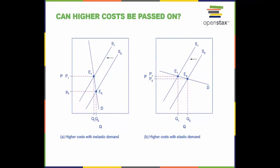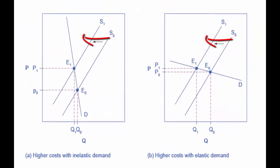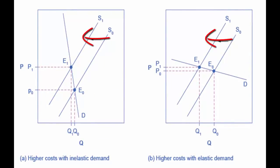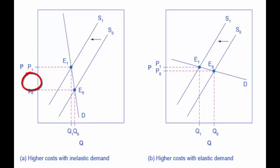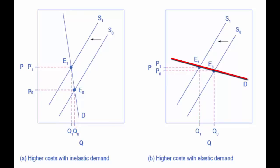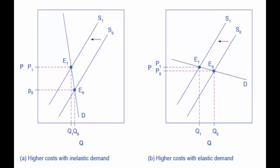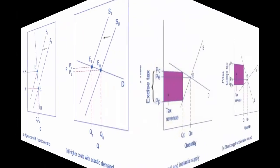A higher cost, like a higher tax on cigarette companies, leads supply to shift to the left. This shift is identical in both graphs shown. However, in the graph on the left where demand is inelastic, the cost increase can largely be passed along to consumers in the form of higher prices without much of a decline in equilibrium quantity. In the graph on the right, demand is elastic, so the shift in supply results primarily in a lower equilibrium quantity and a small change in price. Consumers suffer in either case, but in the graph on the left they suffer from paying a higher price for the same quantity, while in the graph on the right they suffer from buying a lower quantity and needing to shift their consumption elsewhere.